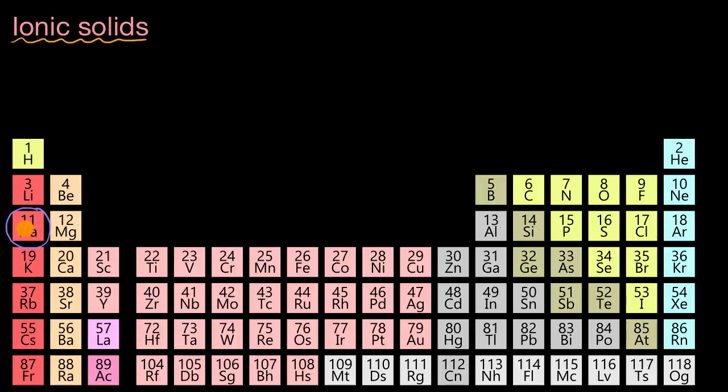The sodiums might lose an electron to the chlorines, in which case you're going to have sodium cations, positively charged ions. And if the chlorines are now taking those electrons, they then become chloride anions. And now if you have a bunch of positive ions hanging around a bunch of negative ions, what do you think is going to happen?